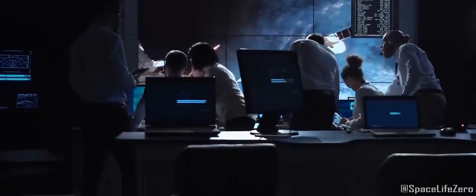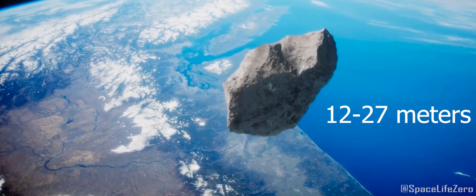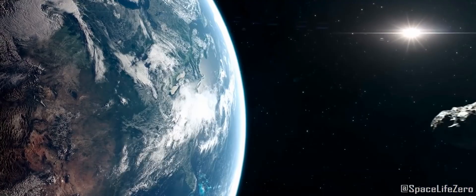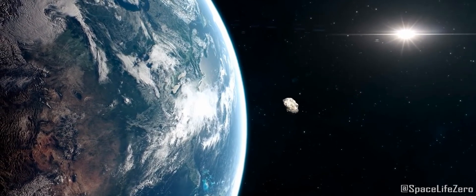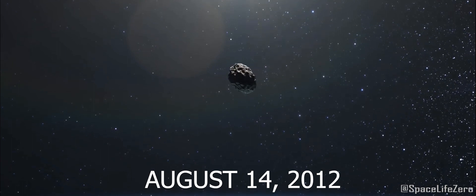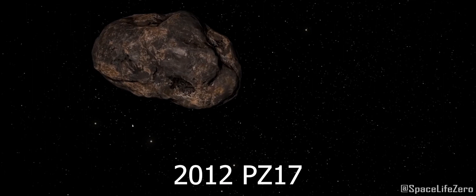According to NASA's JPL at California, an asteroid with the size estimated in the range from 12 to 27 meters is heading towards our planet Earth on August 30th, 2023. This asteroid was discovered on August 14th, 2012 and has been named Asteroid 2012 PZ17.